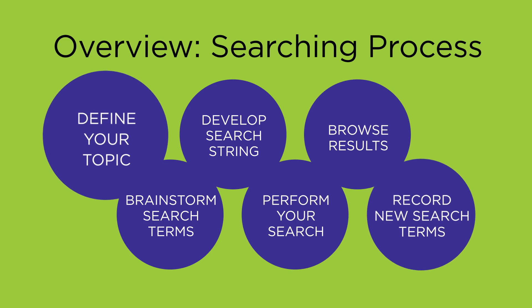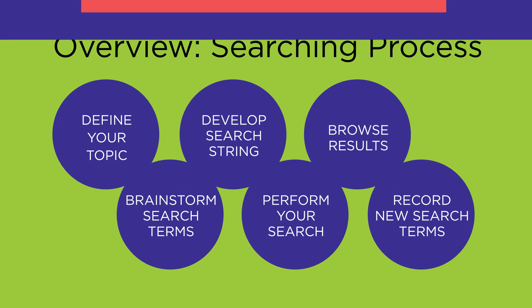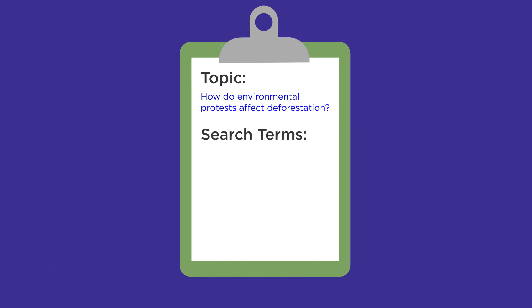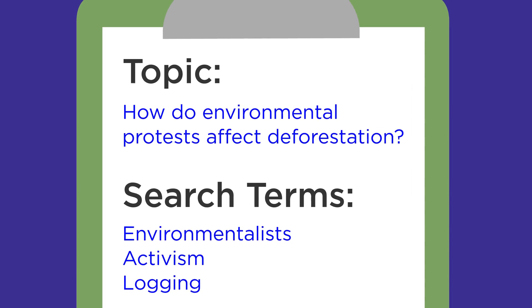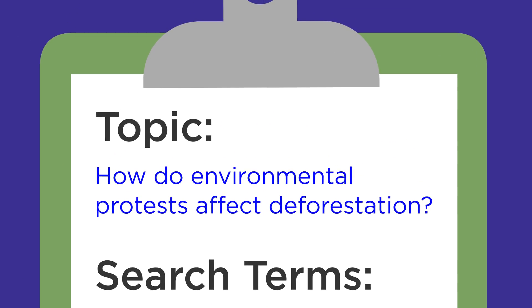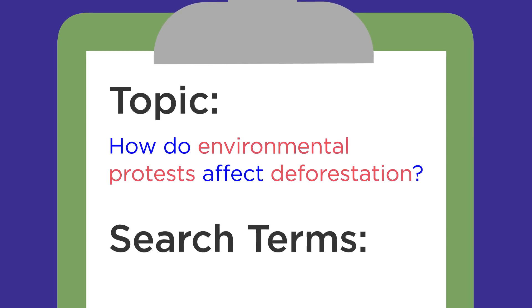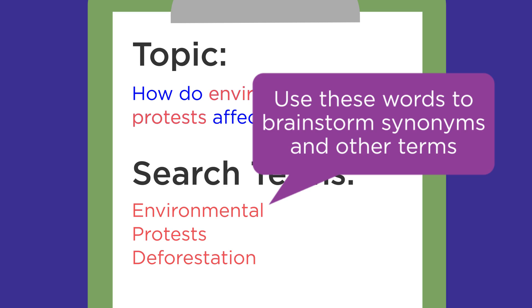As you search, you may add to your list of search terms and your topic may develop and change. Let's look at some methods to brainstorm some good search terms. You may find it helpful to keep a written list of search terms, which you can add to as you go. The first step of brainstorming search terms is to look at your topic sentence and pick out the words that represent the main ideas. These main idea words can be your first search terms. Use these words to brainstorm synonyms and other search terms to add to your list.